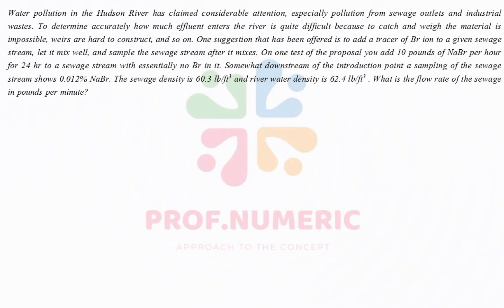In one test of the proposal, you add 10 pounds of sodium bromate per hour for 24 hours to a sewage stream with essentially no bromate in it. Somewhat downstream of the introduction point, a sampling of the sewage stream shows 0.012 percent sodium bromate. The sewage density is 60.3 pounds per cubic foot and the river water density is 62.4 pounds per cubic foot. What is the flow rate of the sewage in pounds per minute?